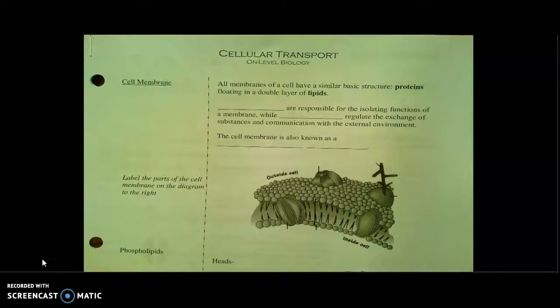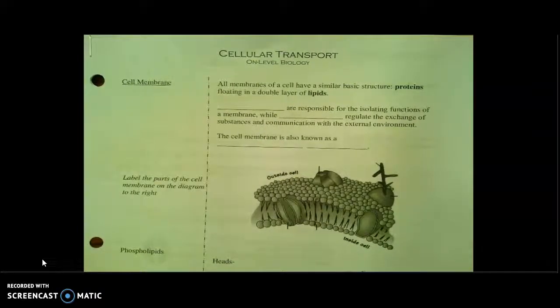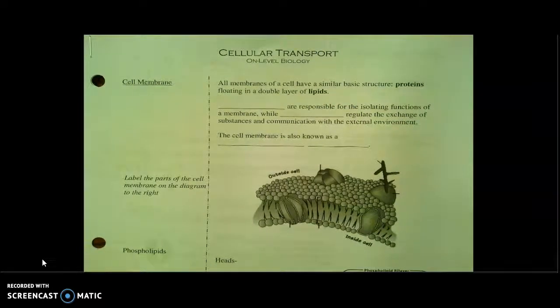So all membranes in the cell, whether we're talking about the outermost covering of the cell or the membranes inside the cell, like the nuclear membrane and the membrane of the ER and the Golgi, all of these membranes are going to have a really similar basic structure. And they're going to be made of a couple of the organic molecules that we learned about before.